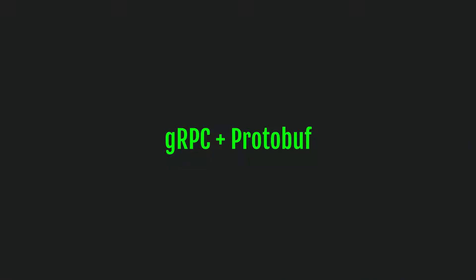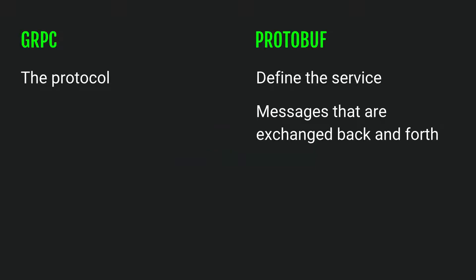Pokemon Go uses a combination of gRPC and another technology called protocol buffers, or protobufs. Combined, this is how you make an API and have a server and client exchange messages. When I first started developing APIs with gRPC and protocol buffers, I had a hard time figuring out the difference between the two — I thought they were almost interchangeable. Essentially, gRPC is the protocol and protobufs is how you define the service and the messages exchanged between client and server.